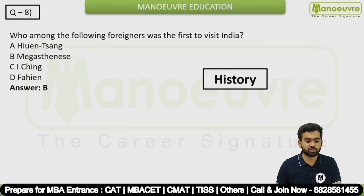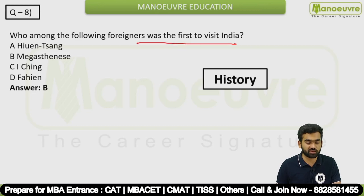Question 8 is a history question. Who among the following foreigners was the first to visit India? The answer is Megasthenes.